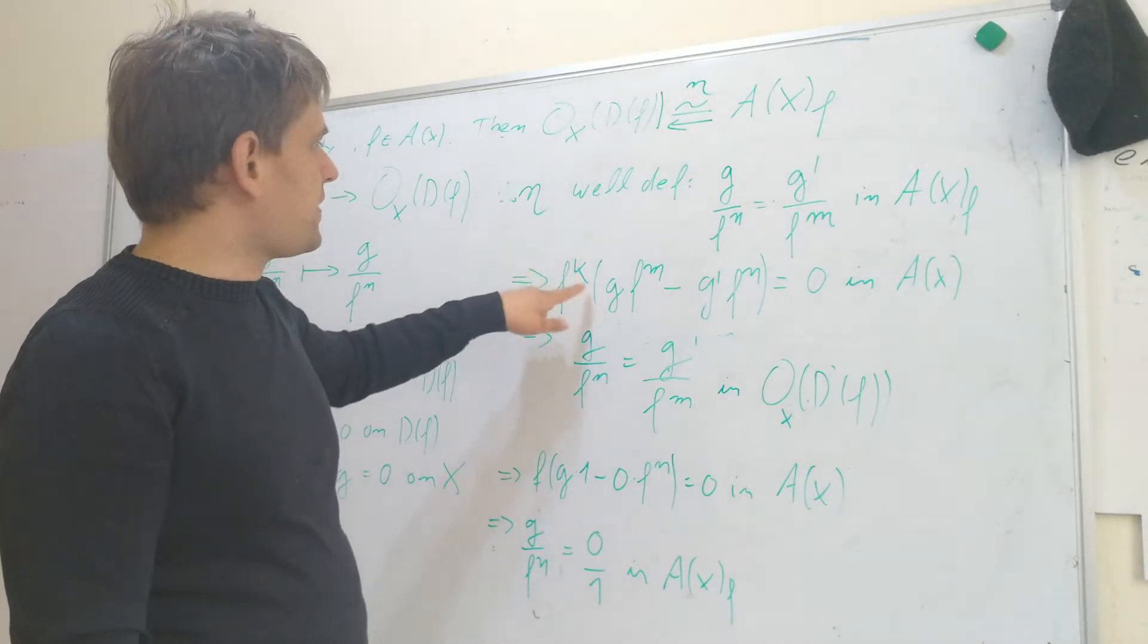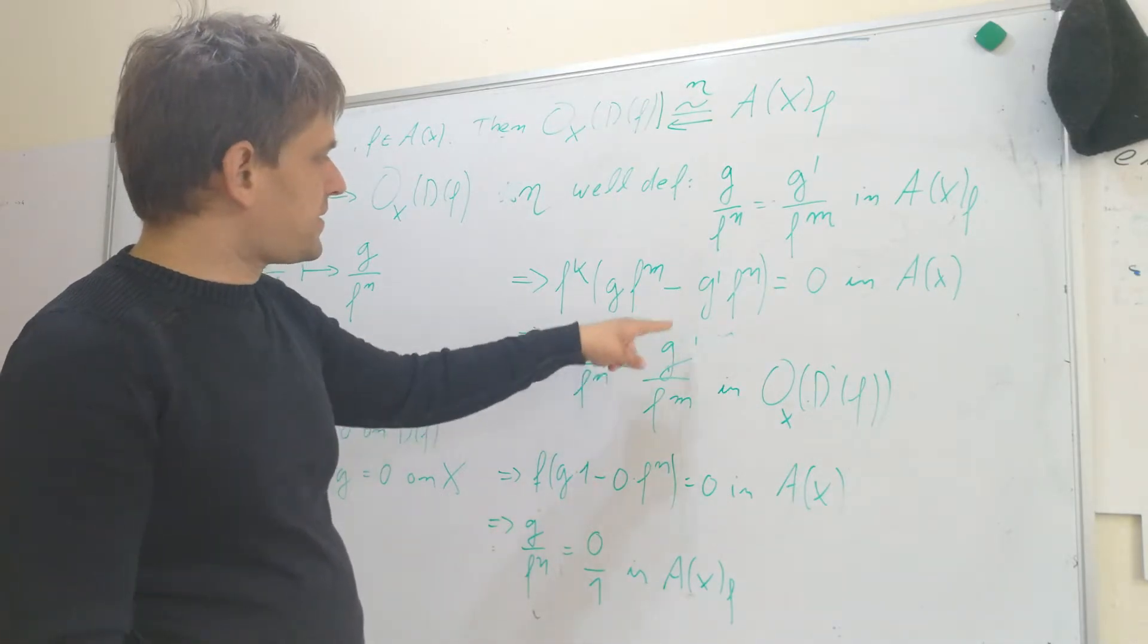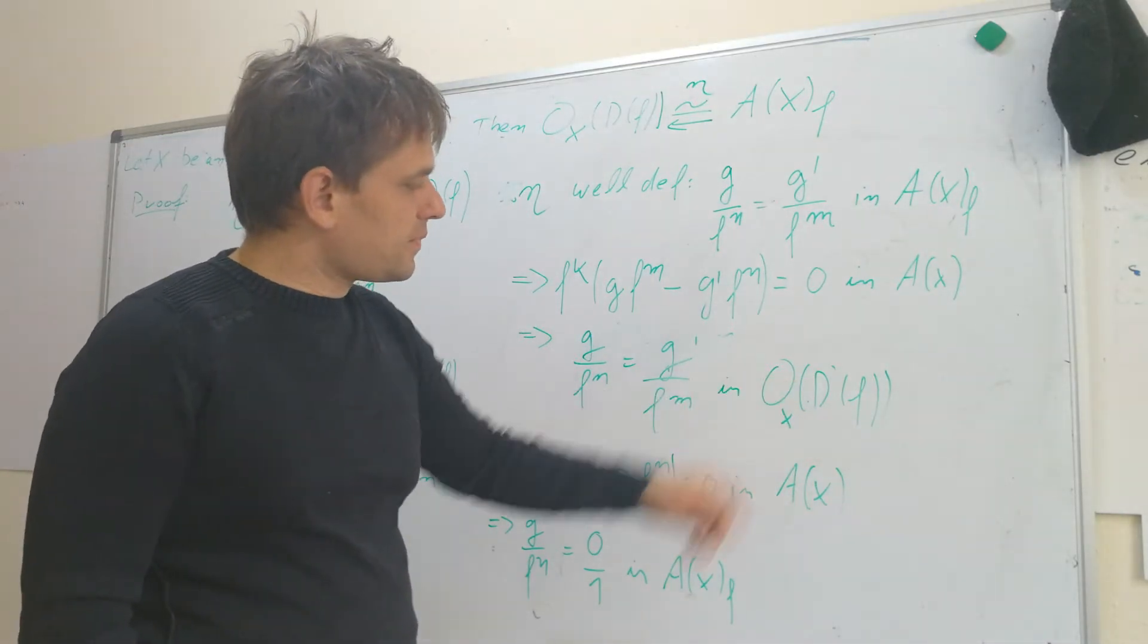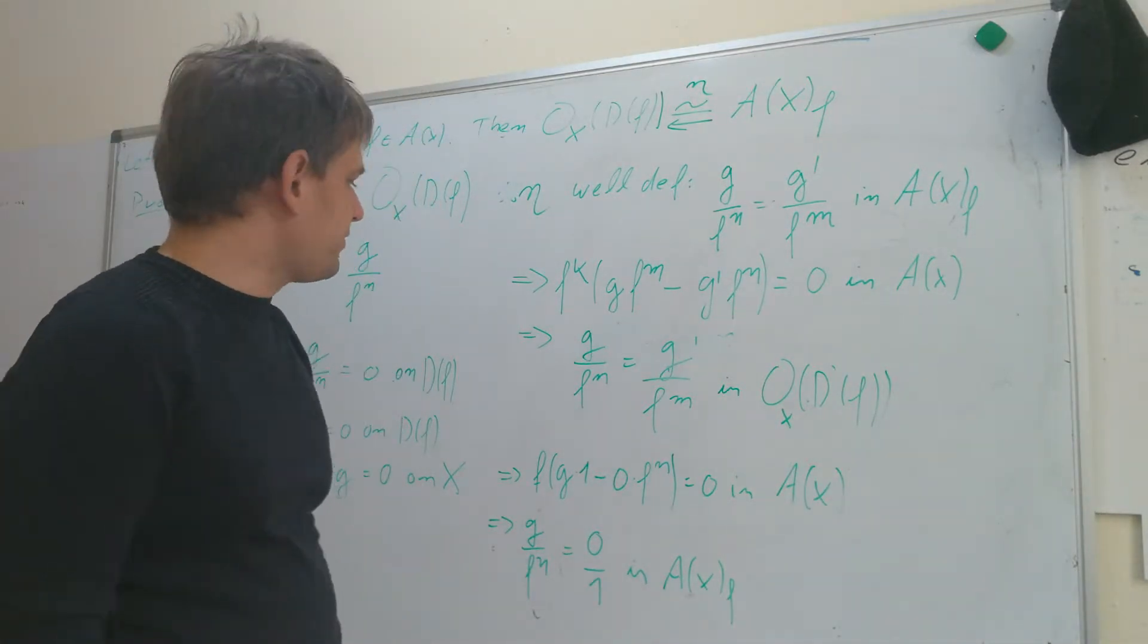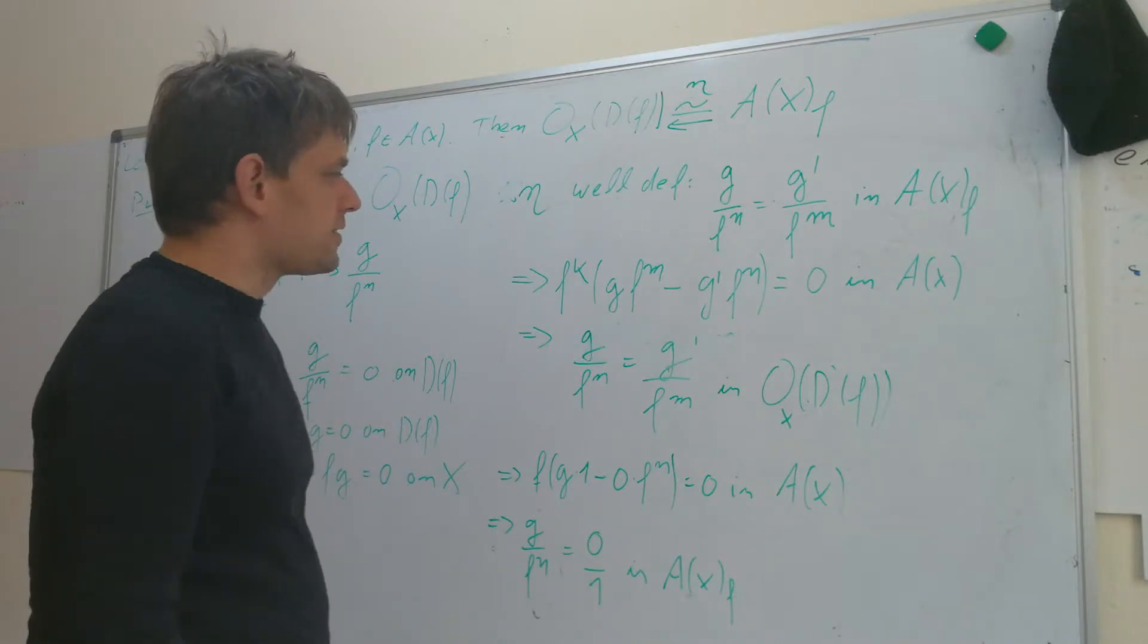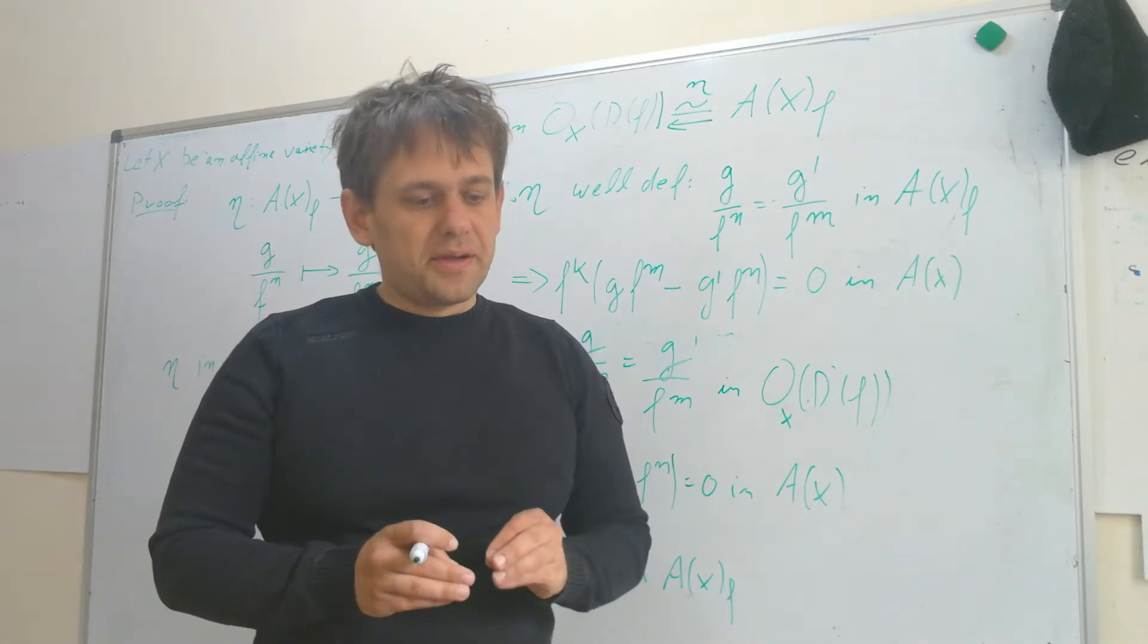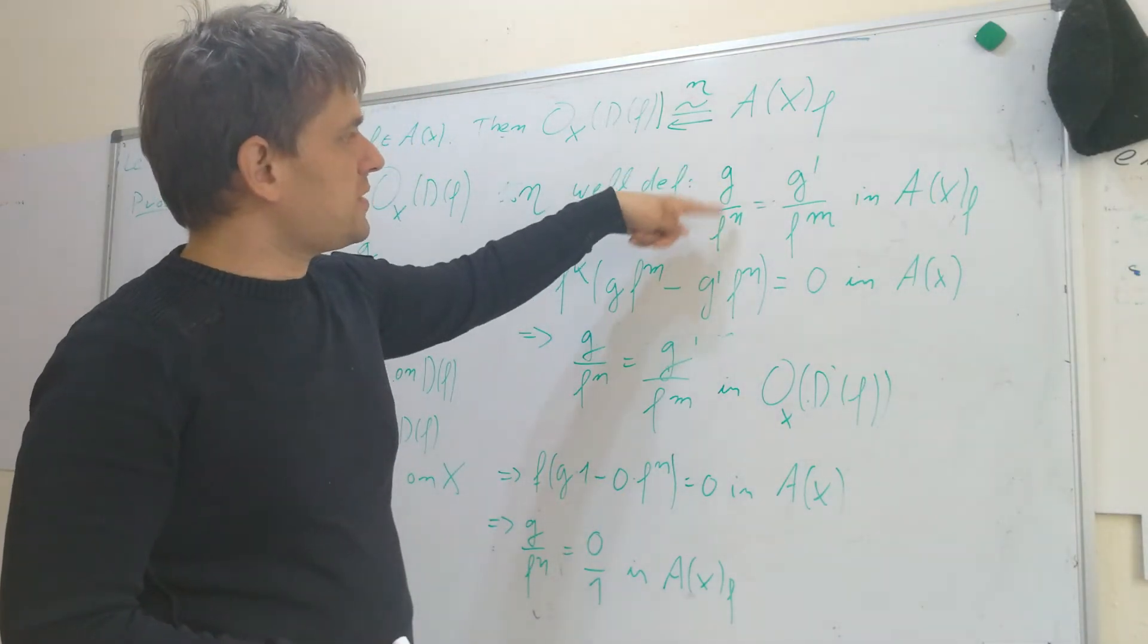This is equal to zero, so this implies that g divided by f^n is the same as g bar divided by f^m in the k-algebra on df. For surjectivity, there is nothing to prove because we have already seen in a previous tutorial that the regular functions on df are given by quotients of this form.